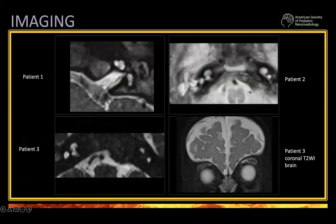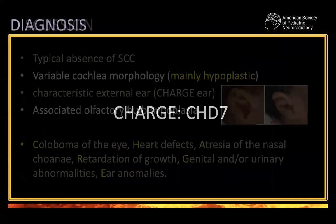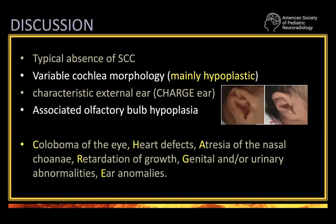But all of them have, instead of the vestibule and semicircular canal areas, just a small cyst without semicircular canals. On top of that, patient three also showed absence of olfactory bulbs, which is crucial for the diagnosis. So remember: CHARGE has typical absence of semicircular canals in most cases — not all, but most. Variable cochlear morphology, mainly hypoplastic.